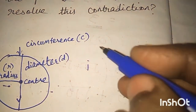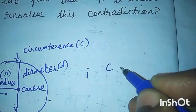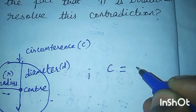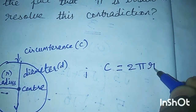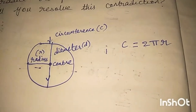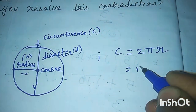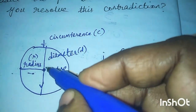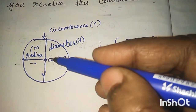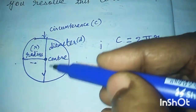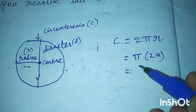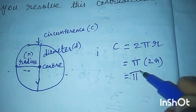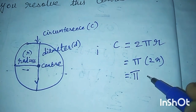Circumference C is equal to 2πr. Since 2r equals diameter d, we can write C equals π times d. Therefore, π equals C divided by d.